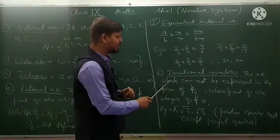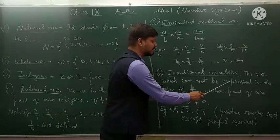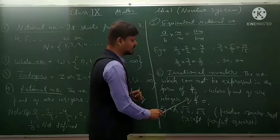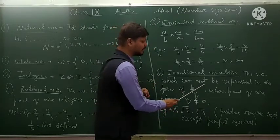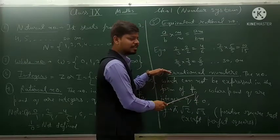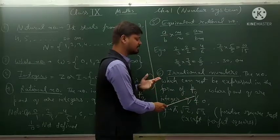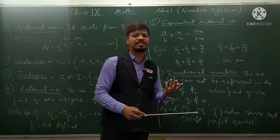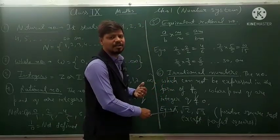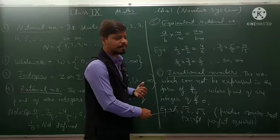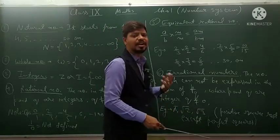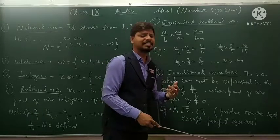Next definition is irrational number. The number which cannot be expressed in the form of p upon q, where p and q are integers and q is not equal to zero, is called an irrational number. Pi is also an example of an irrational number. Root 2, root 3, root 5, root 7, root 11 are all examples of irrational numbers.